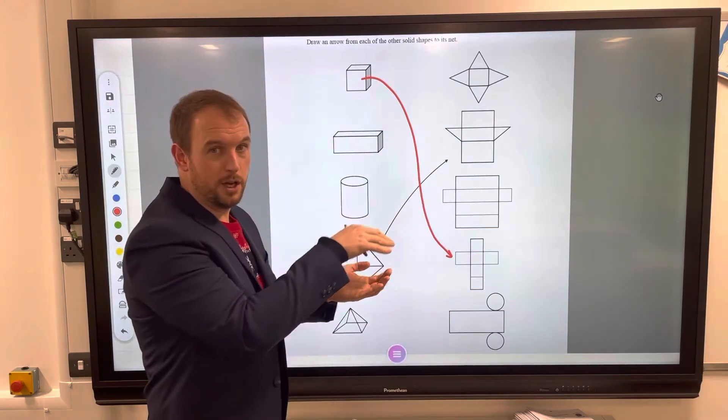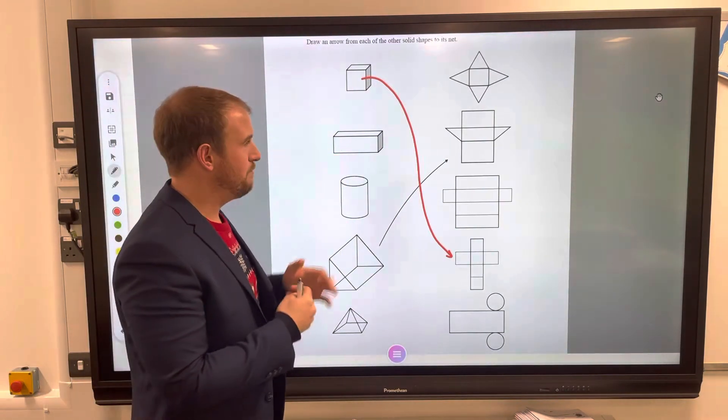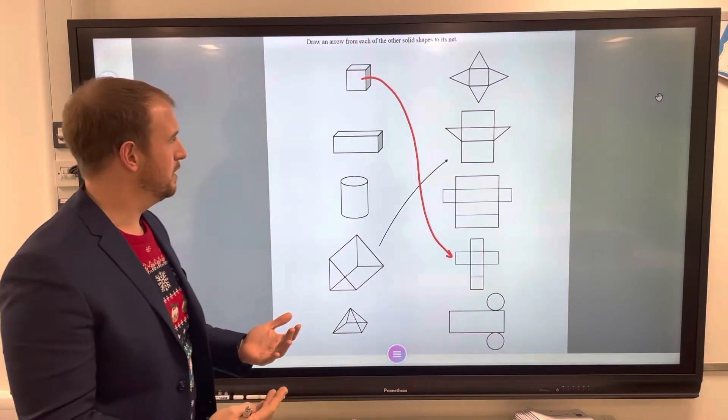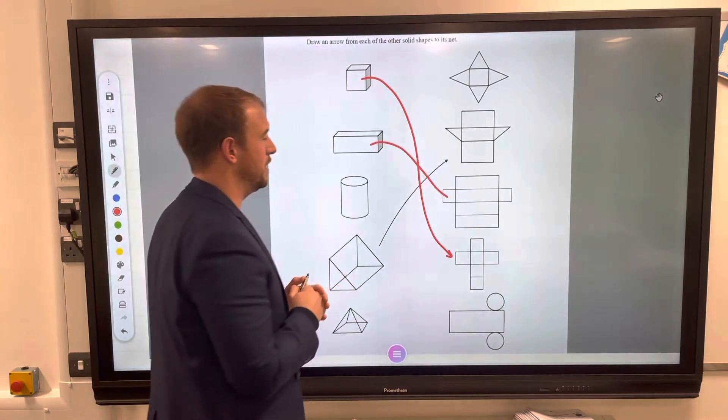Does it make a cube? Yes it does. So here now we have squares and rectangles. Look on here - which one has squares and rectangles? It has to be this one, so that one would match to that one. So I'm identifying those faces here.